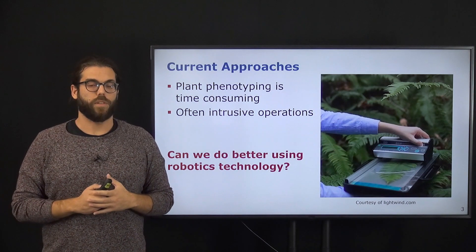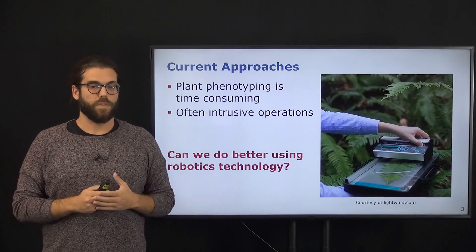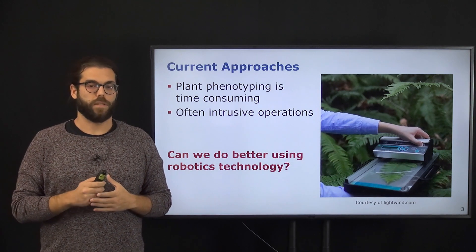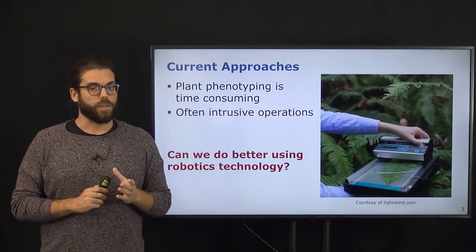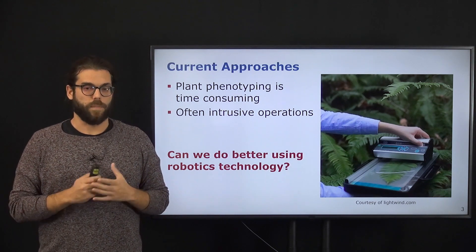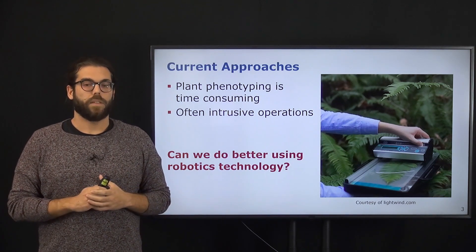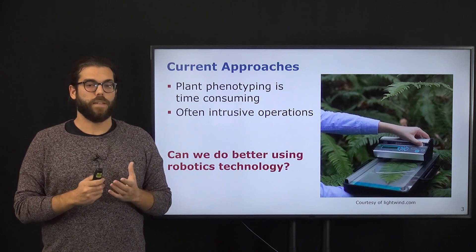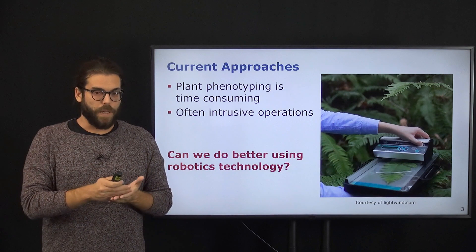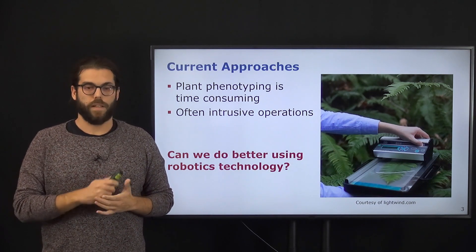However, current approaches for phenotyping are time-consuming and require intrusive operations. For example, to measure the leaf area, which is a very important characteristic because it tells us how much sunlight the plant is capturing, we need a human operator inside the field manually taking the measure with a flatbed scanner, as you can see in this picture.